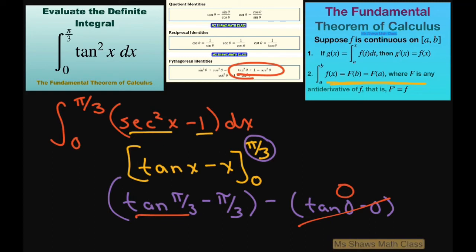All right, so tan(π/3) is √3, and then we have minus π/3. So this will be your final answer.